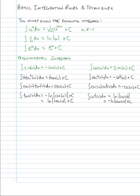The integral of sec²(u) is tan(u) + C, because the derivative of tan(u) is sec²(u). The integral of csc²(u) is −cot(u) + C, because the derivative of cot(u) is −csc²(u). These come from remembering how we differentiate.